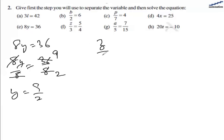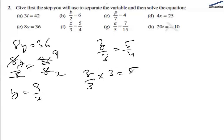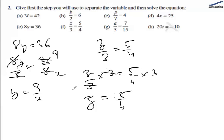For part f we have z divided by 3 equal to 5 by 4. We multiply both sides by 3. On the left hand side z divided by 3 multiplied by 3, the 3s cancel, leaving z. On the right hand side 5 by 4 multiplied by 3 gives 15 by 4. So z equal to 15 by 4 is the answer for part f.